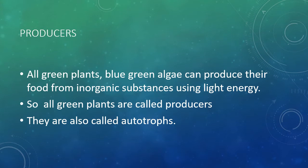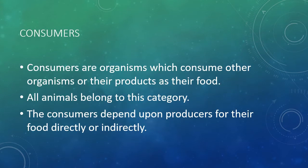Producers: All green plants and blue-green algae can produce their food from inorganic substances using light energy. So all green plants are called producers. They are also called autotrophs. Consumers are organisms which consume other organisms or their products as their food. All animals belong to this category. The consumers depend upon producers for their food directly or indirectly.